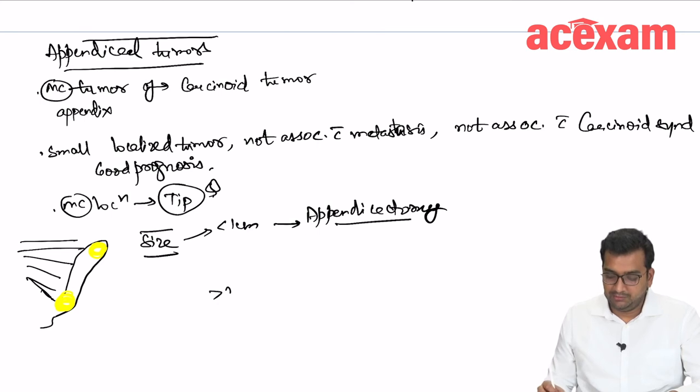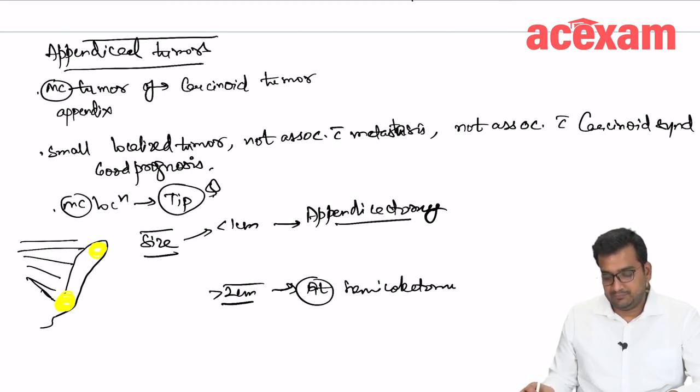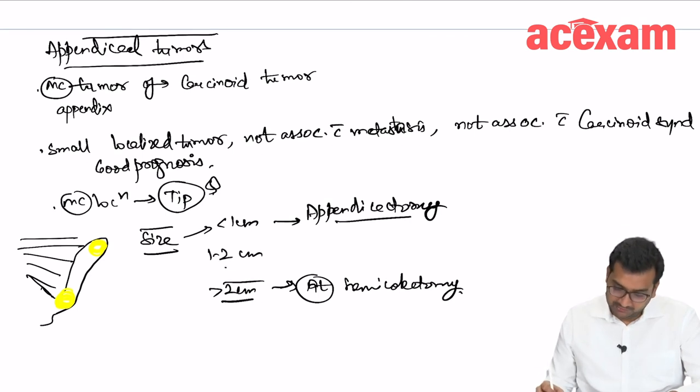If it is more than 2 centimeters, we will go for right hemicolectomy. And if it is 1 to 2 centimeters, we will do usually appendicectomy.